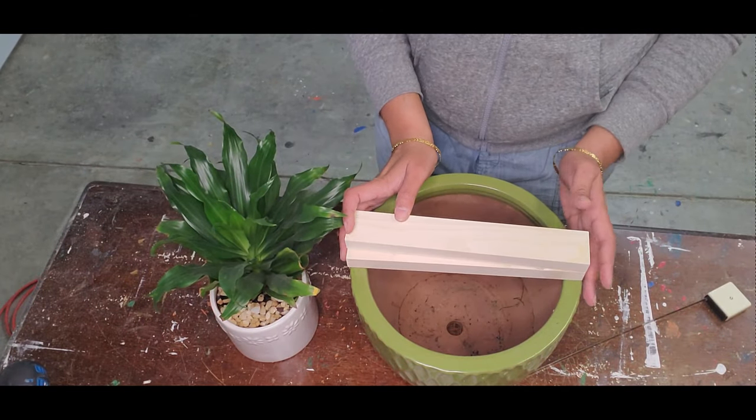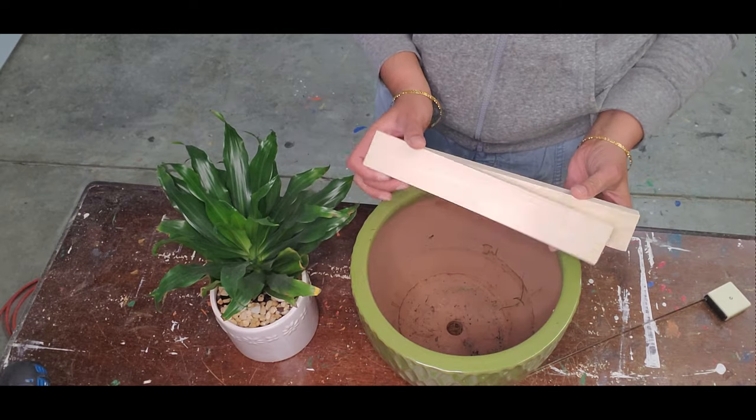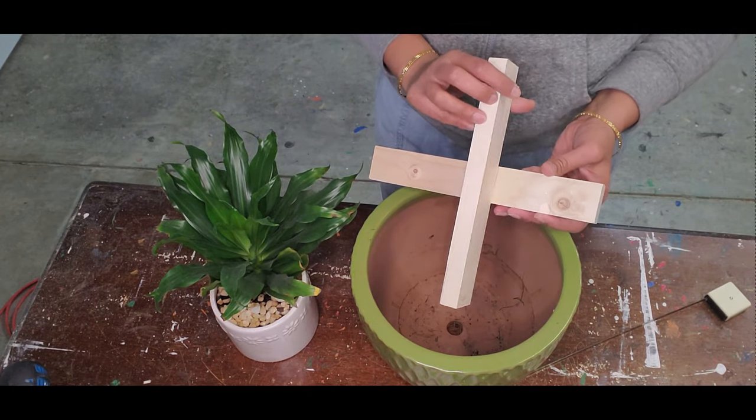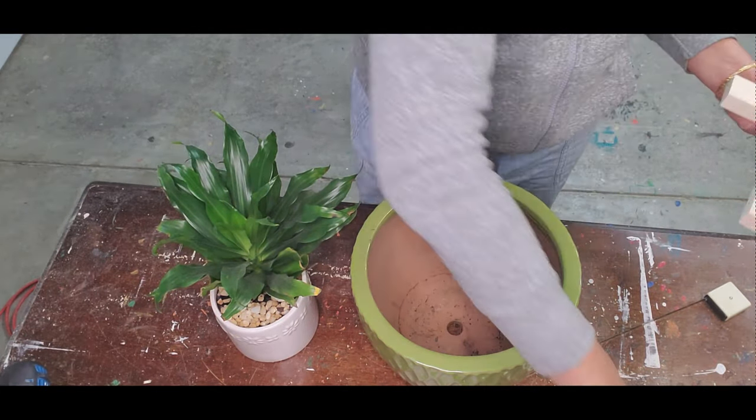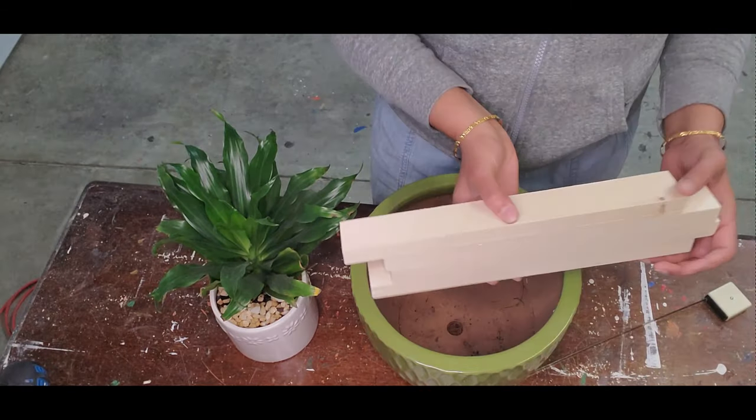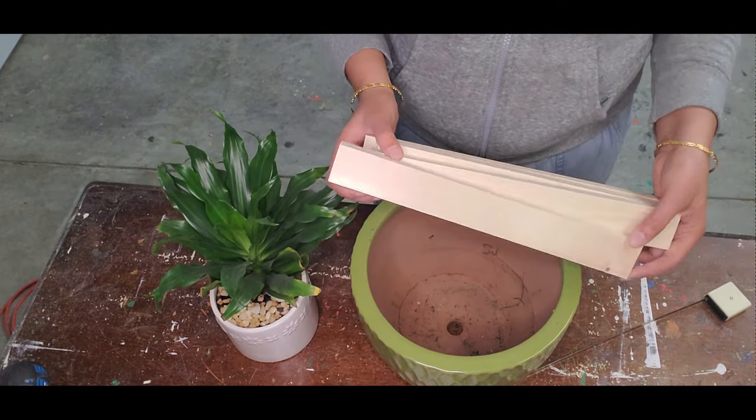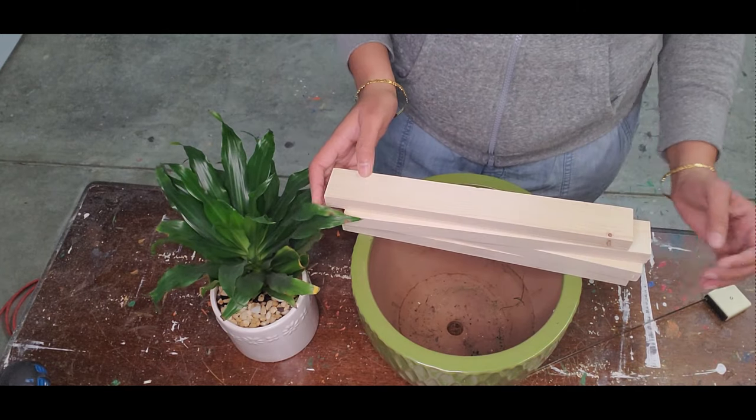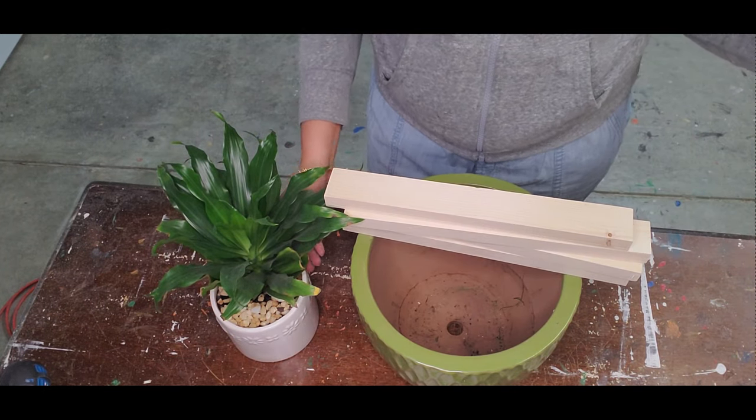For this DIY, I need 1x2 inch wooden boards. I have cut two pieces of this wood to the length of 9.75 inches which is the diameter of the planter and four pieces of length 12 inches that is the height I need.